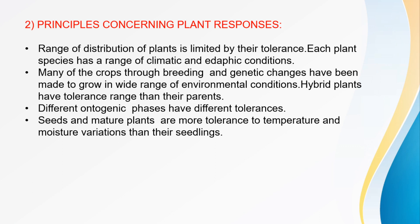Different ontogenic phases have different tolerances. Seedlings represent one phase of development. Seeds and mature plants are more tolerant to temperature and moisture variations than seedlings.